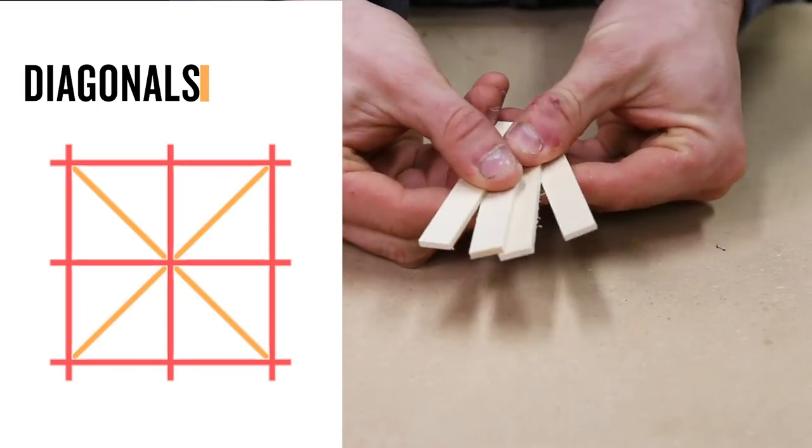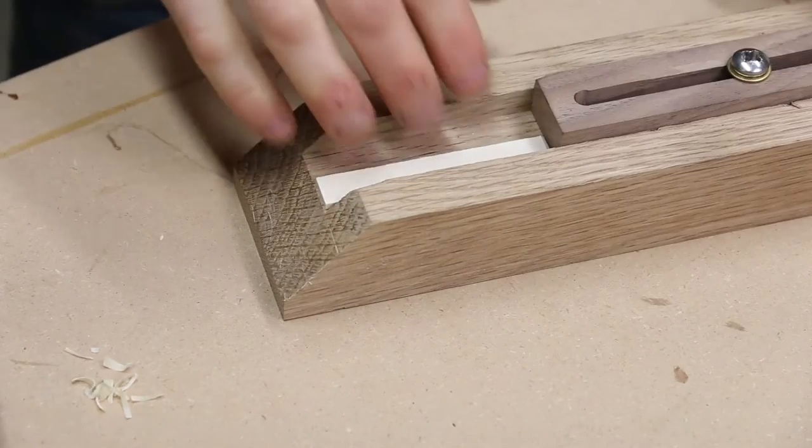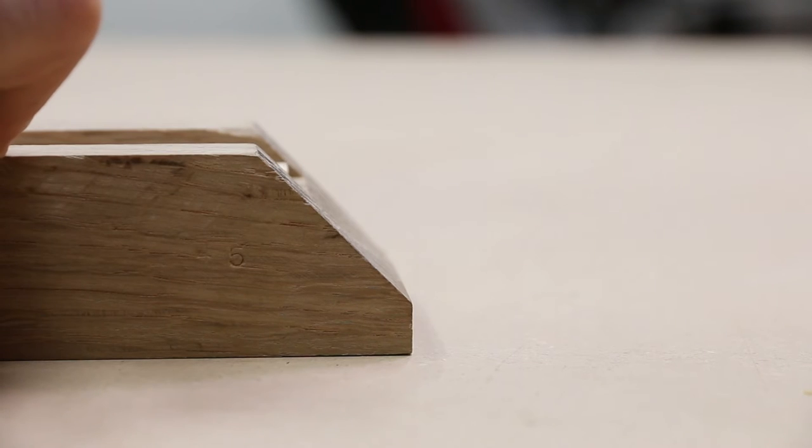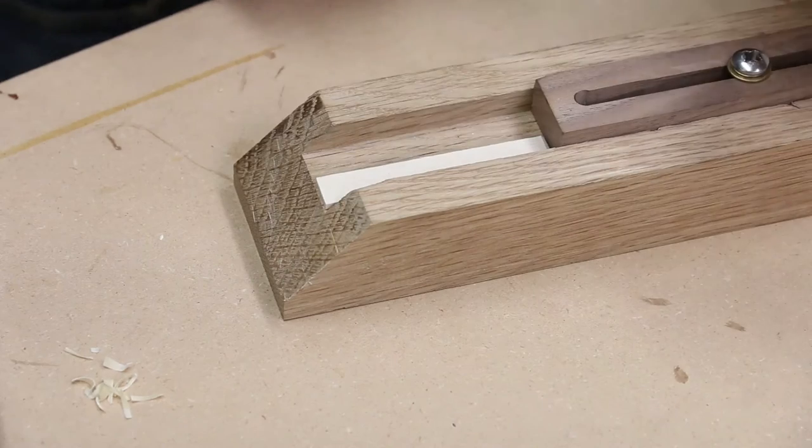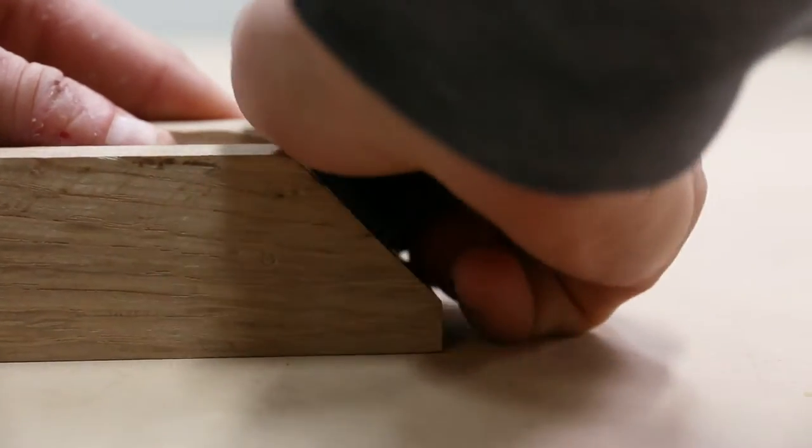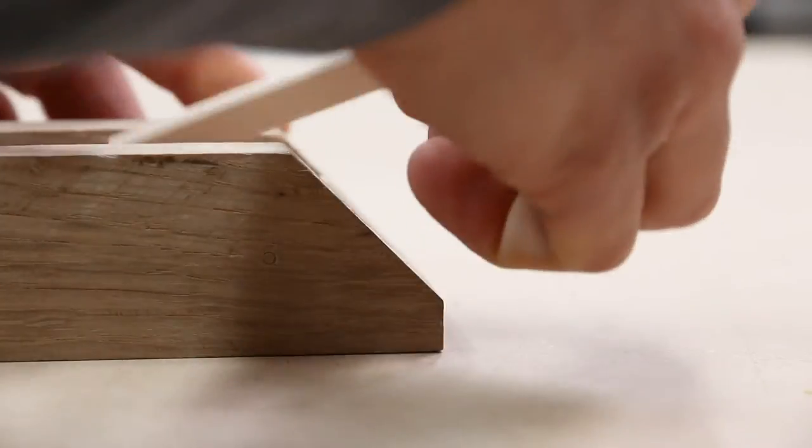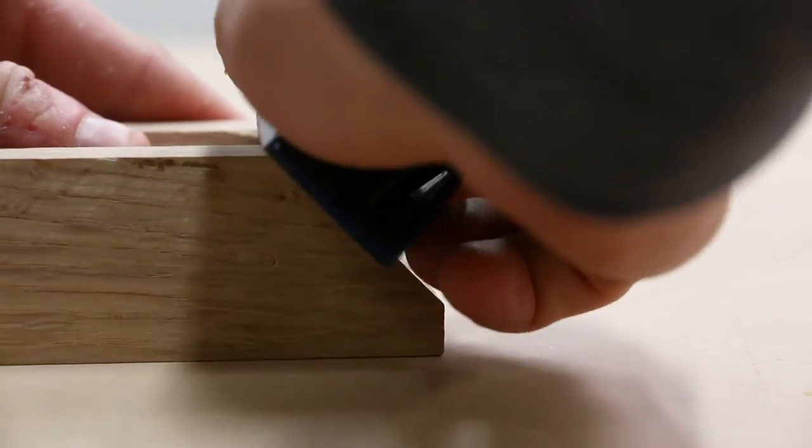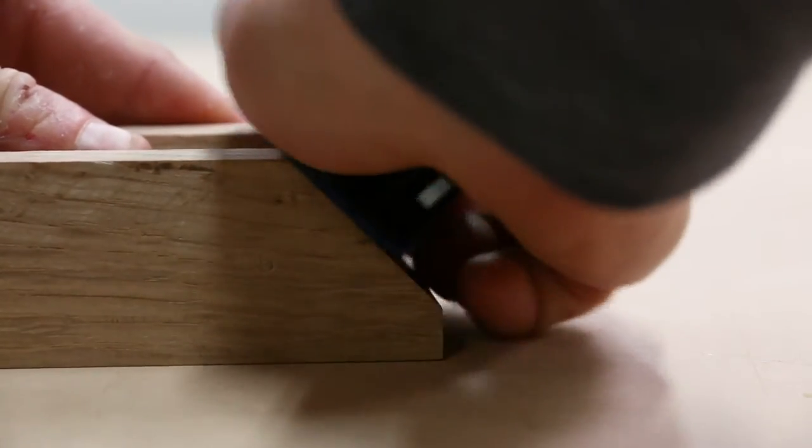Once the glue dries a little, I start cutting the diagonals. I put a diagonal piece into the 45 degree jig until it protrudes just a bit. I slide the stop to meet it and tighten it down. Referencing the jig, I cut a bevel on one side, then I flip and repeat for the other side to create this 90 degree angle at the end.